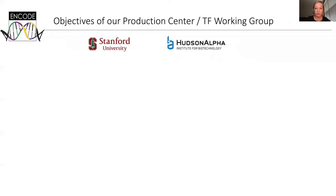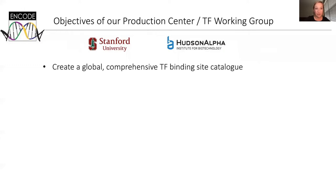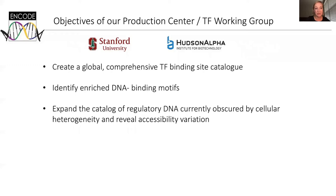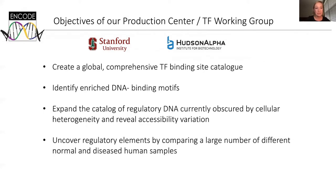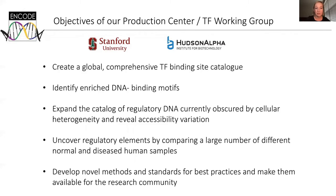The transcription factor working group consists of mainly two ENCODE production centers — ours at Stanford, and the lab of Rick Myers and Eric Mendenhall at Hudson Alpha in Alabama. The objectives of our production center are to create a global comprehensive transcription factor binding site catalog, identify enriched DNA binding motifs, expand the catalog of regulatory DNA currently obscured by cellular heterogeneity, and reveal accessibility variation. We try to uncover regulatory elements by comparing a large number of different normal and diseased human samples, and we develop novel methods and standards for best practices.